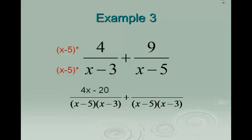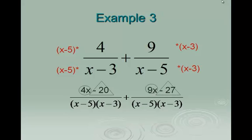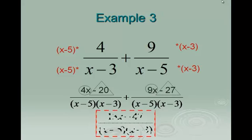On the second fraction, what's the new factor that's there that wasn't originally there? x minus 3. So I'm going to multiply that second fraction by x minus 3. When I distribute the 9, I get 9x minus 27. Now that we have the common denominator, we keep it and combine like terms on the top. We have 4x and 9x as like terms; negative 20 and negative 27 are like terms. Combining gives 13x minus 47 on top, over the common denominator x minus 5 times x minus 3.